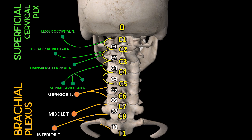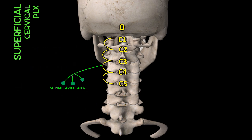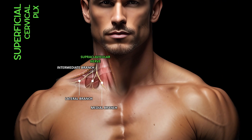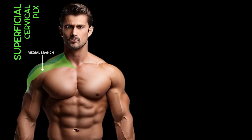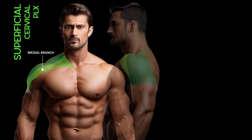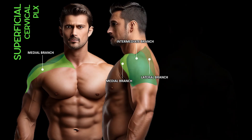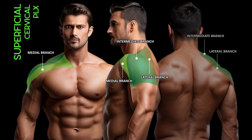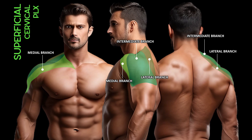The supraclavicular nerve plays a role in innervating certain areas of the skin in the upper chest and shoulder region. It has three branches: the medial, intermediate, and lateral branches. The medial branch supplies sensory innervation to the skin over the upper part of the chest near the sternoclavicular joint. The intermediate branch provides sensory innervation to the skin over the upper and middle parts of the shoulder. The lateral branch innervates the skin over the lateral part of the shoulder.